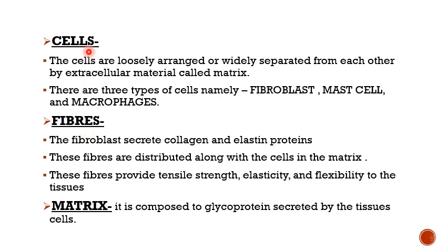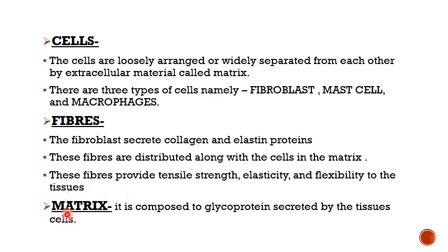The cells are loosely arranged or widely separated from each other by extracellular material called matrix. There are three types of cells: number one is fibroblast, number two is mast cell, and the third one is macrophages. Fibroblasts secrete fibers, that is collagen and elastin proteins. These fibers are distributed along with the cells in the matrix and provide tensile strength, elasticity, and flexibility to the tissues. The third component is matrix, that is your ground substance, composed of glycoprotein secreted by the tissue cells.